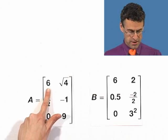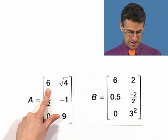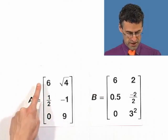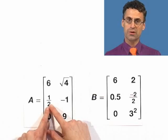For example, A11 is the entry in the first row, first column, which is 6. A21 would be the entry in the second row, first column, which would be a half and so forth.